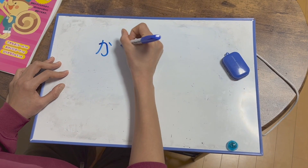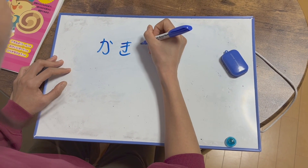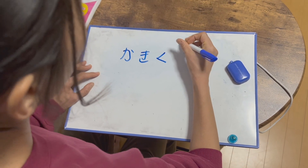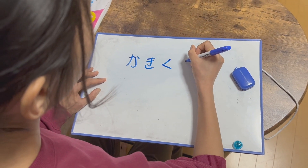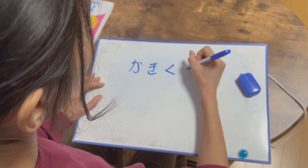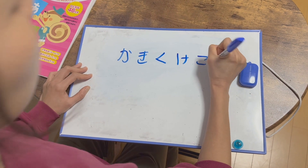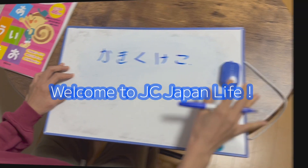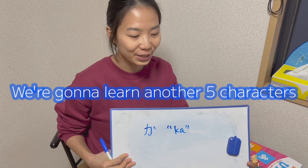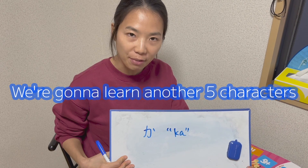Ka, ki, ku, ke, ko. Welcome to Jiu-Jiu-Japan Life. Today we are going to learn another five characters.